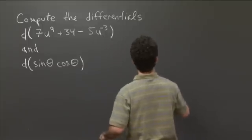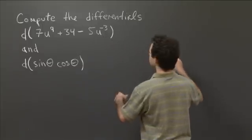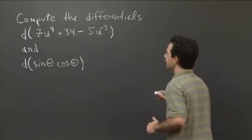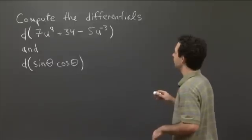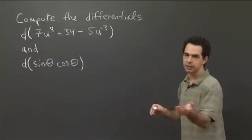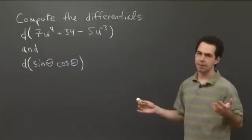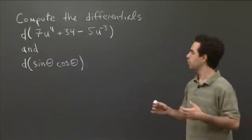Let's do the first one first. So we look at d of 7u to the ninth plus 34 minus 5u to the minus third. And we just can distribute that d through in the same way that we can with ordinary derivatives.